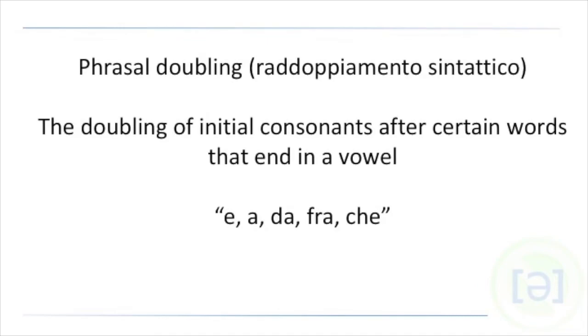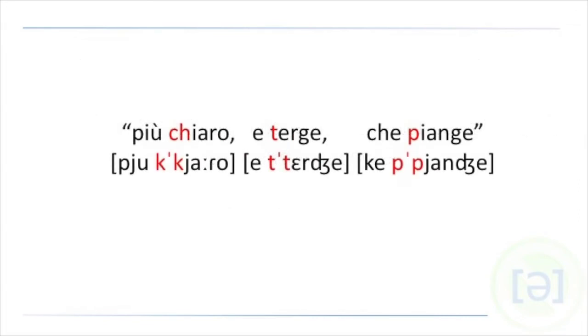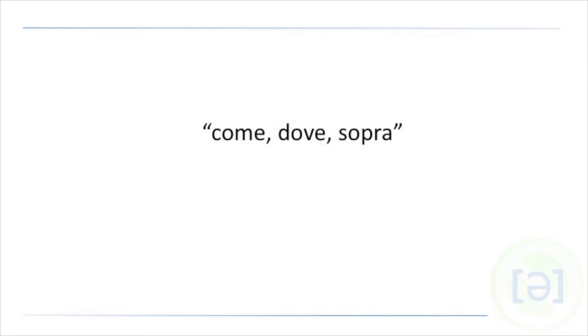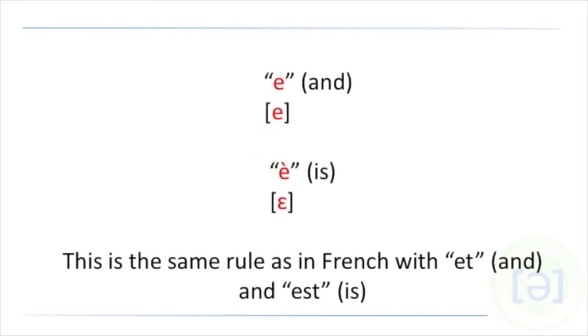This text is sort of defined by all of the phrasal doubling and for all that we've talked about it, we didn't actually define the words. Phrasal doubling or raddoppiamento sintattico is the doubling of an initial consonant after certain words that end in vowels. Any stressed one-syllable word that ends in a vowel and some unstressed ones can take phrasal doubling words like E, A, DA, FRA, CHE and any words that end in an accent marking no matter how many syllables they have like È, GIÀ, PERCHÉ.